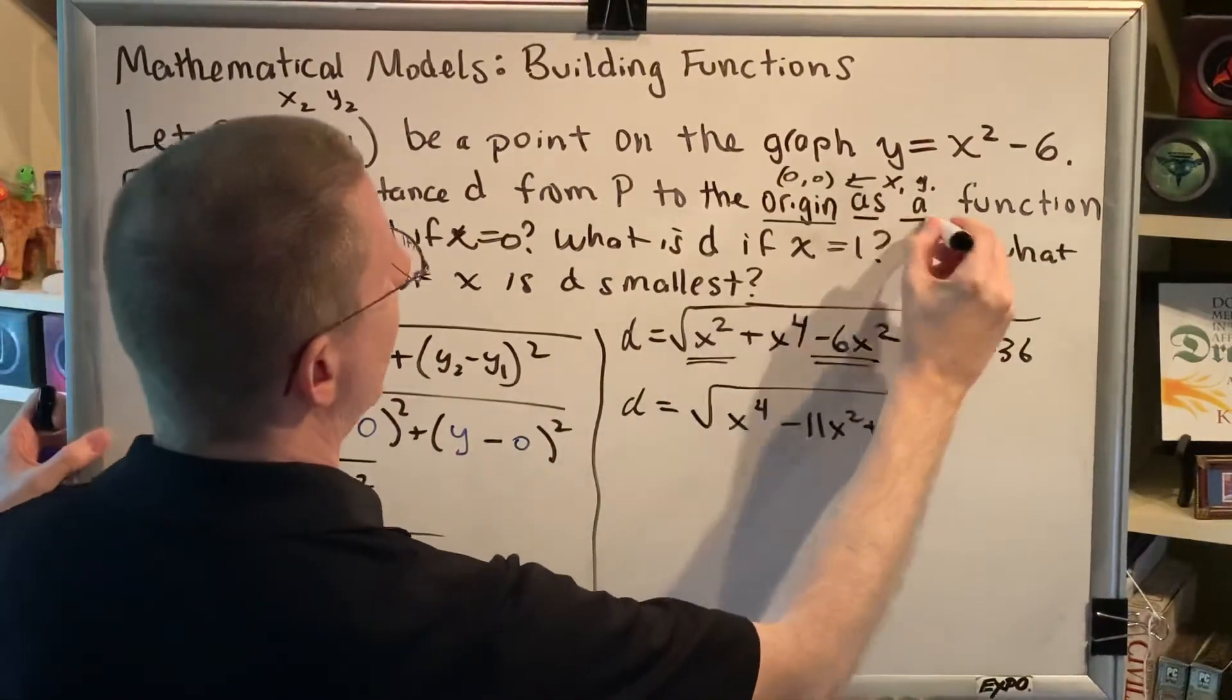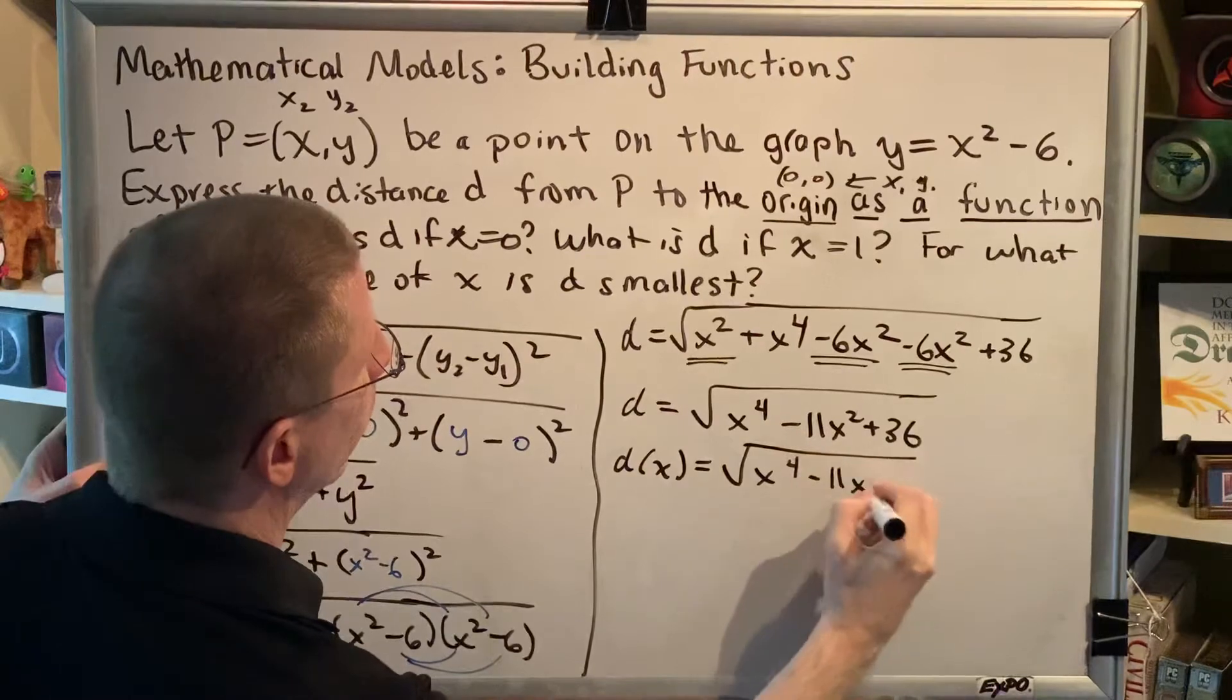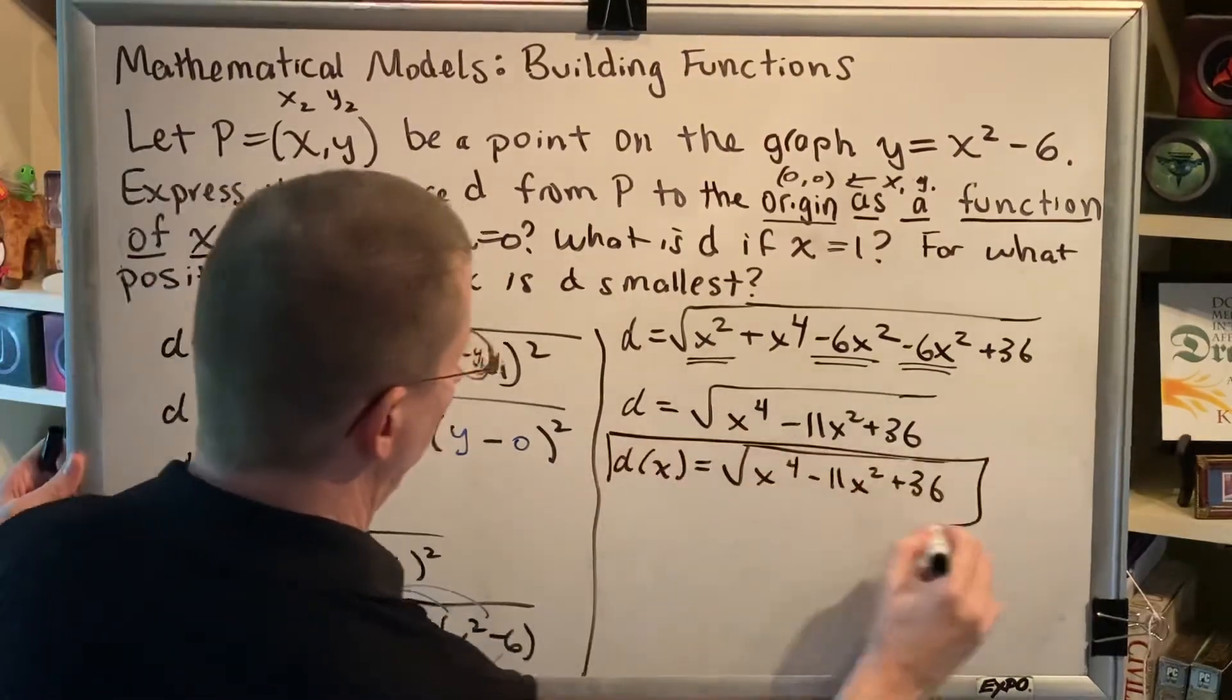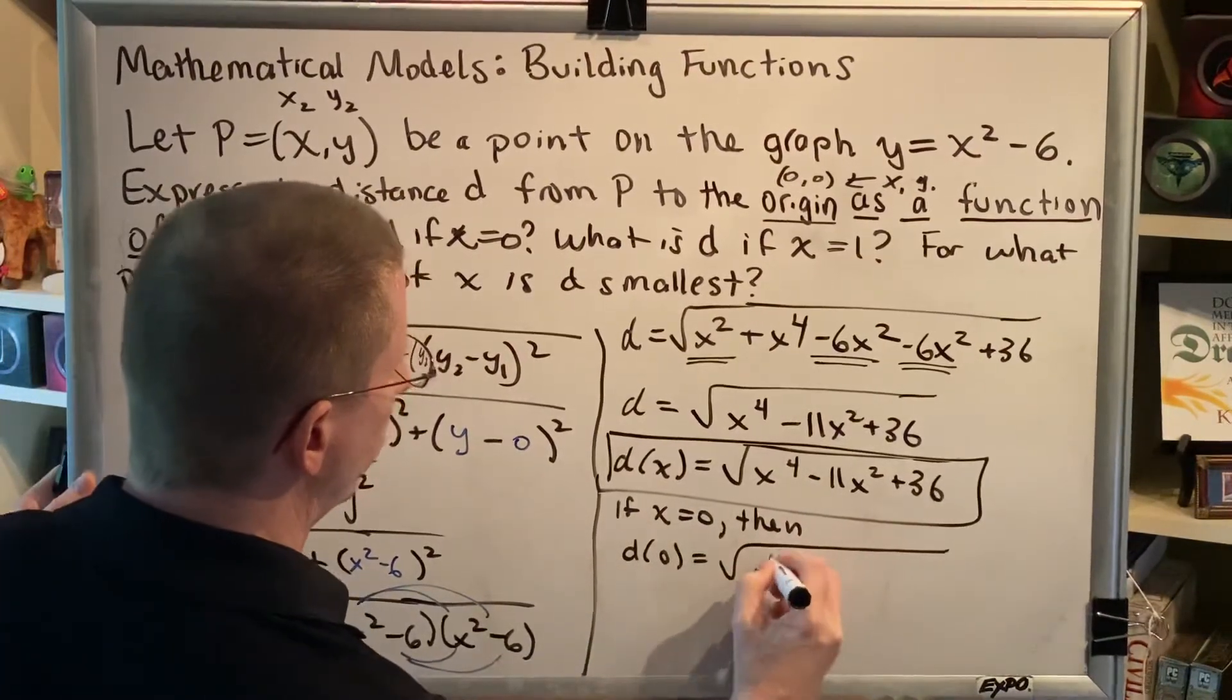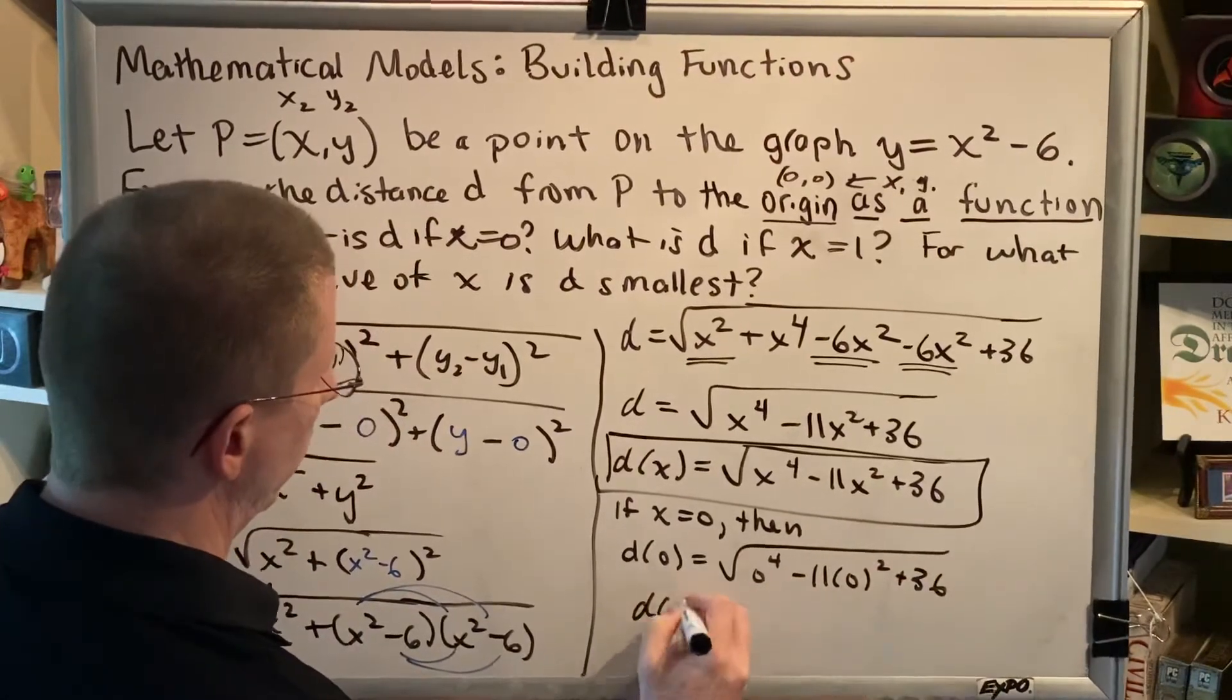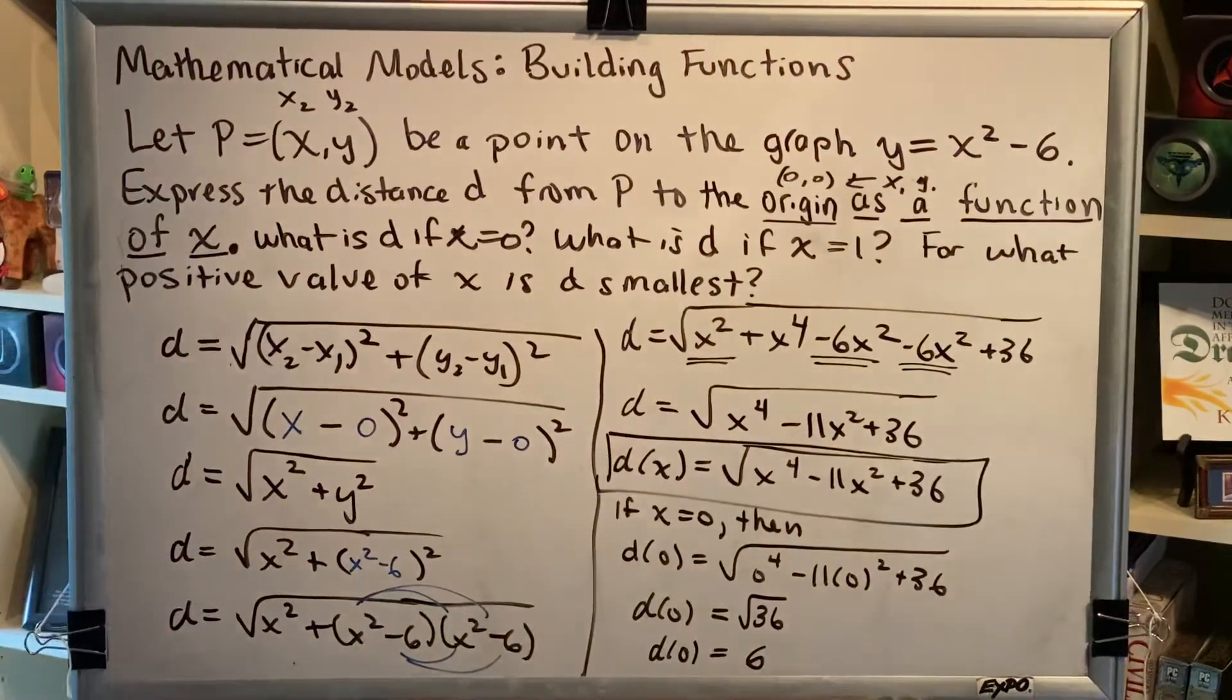And then finally, because the instructions say to express it as a function of x, we have to write d(x). Okay, first part done. Second part, what is d if x=0? All right, so if x=0, then we get d(0)=√(0⁴-11(0)²+36). This is zero, this is zero, so underneath we just have 36, and the square root of 36 is 6. So when x is zero, the distance is 6.